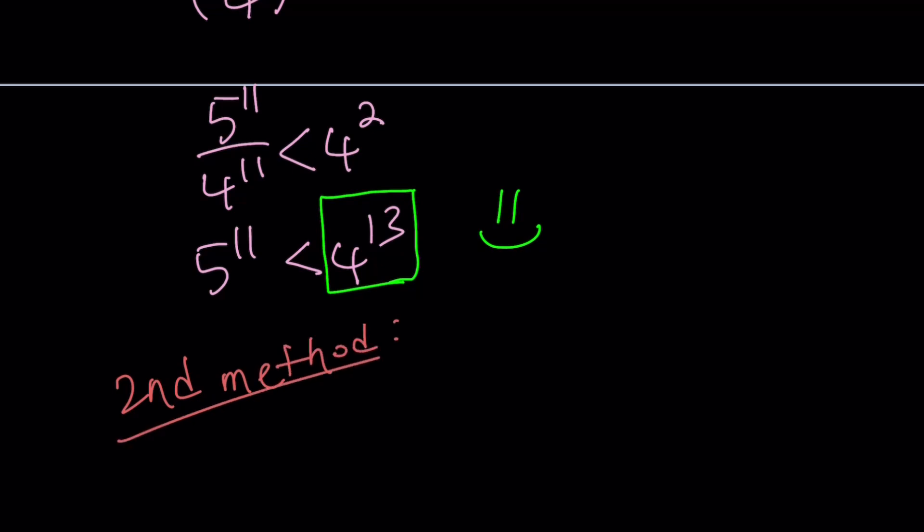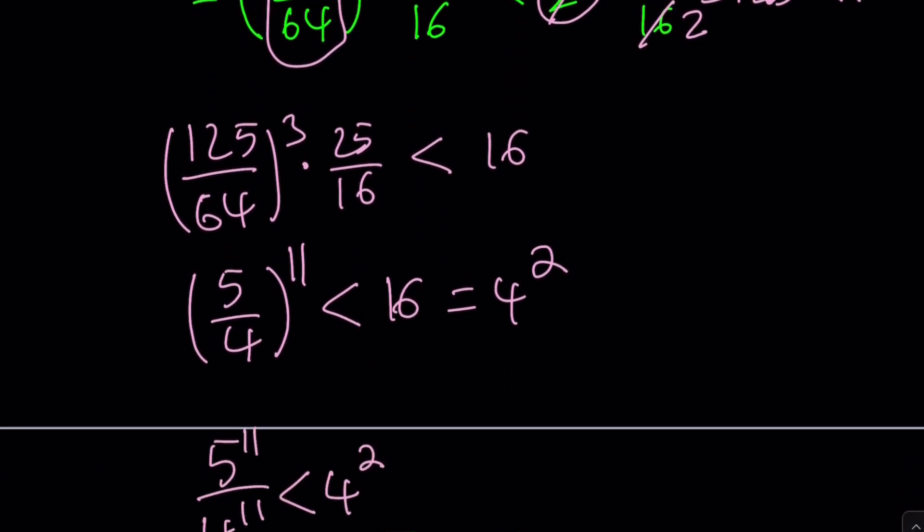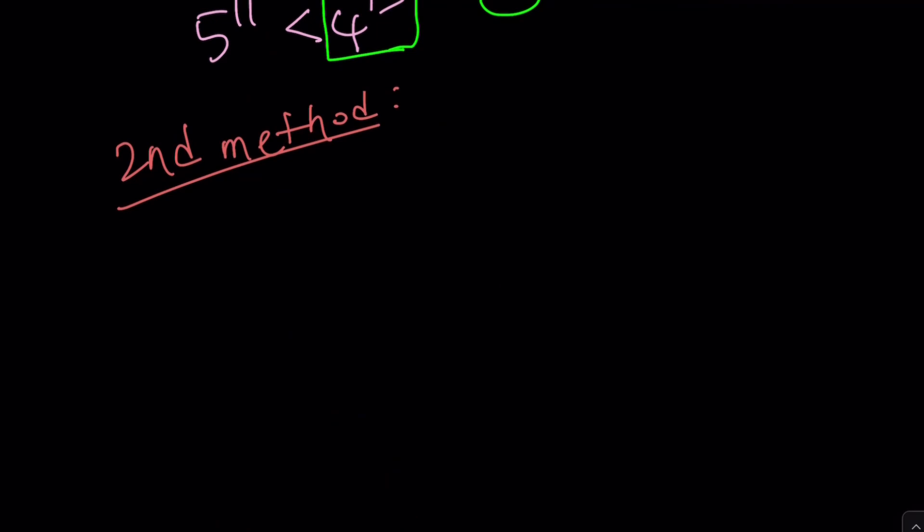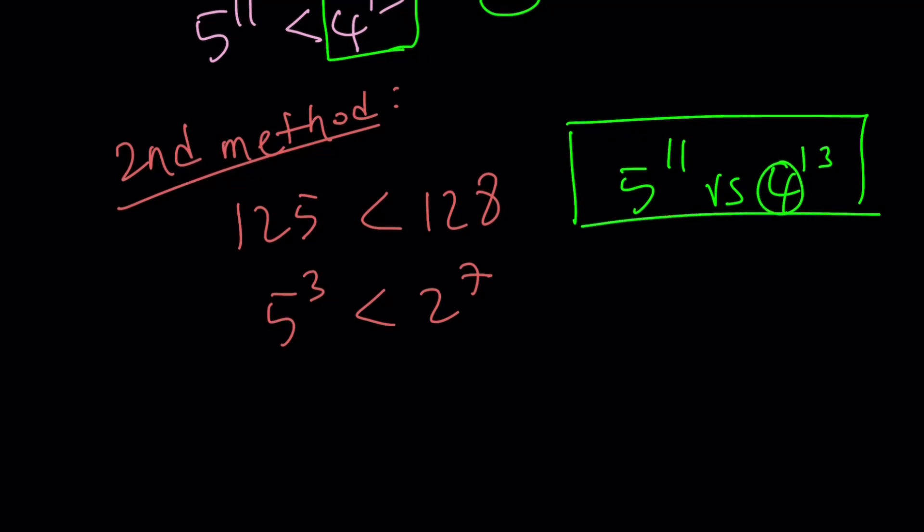Second method. In the first method, 125 is being compared to 128. 125 is less than 128. This is 5 to the 3rd and this is 2 to the 7th. So 5 to the 3rd is less than 2 to the 7th. What does that have to do with powers of 2? Well, 4 is 2 squared.